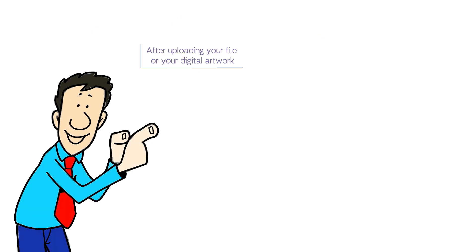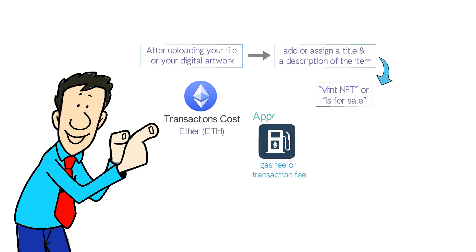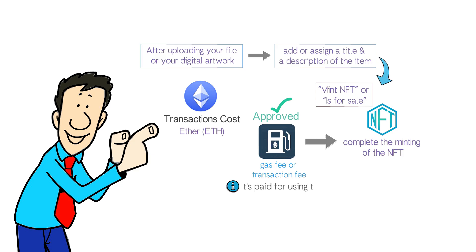After uploading your file or digital artwork, you can add a title and description of the item, then click the 'Mint NFT' or 'List for Sale' button, depending on the platform. All transactions made on the Ethereum network have a cost paid with ETH cryptocurrency. At this stage, a gas fee or transaction fee will need to be approved in your digital wallet to complete the minting. Gas fees are not charged by the NFT platform — they are paid for using the Ethereum blockchain. After uploading the file and paying the gas fee, the NFT minting process is automatically started, and the Ethereum smart contract executes code that will be implemented in your artwork on the blockchain.